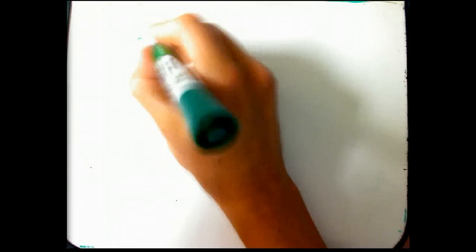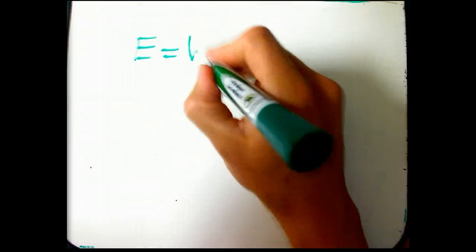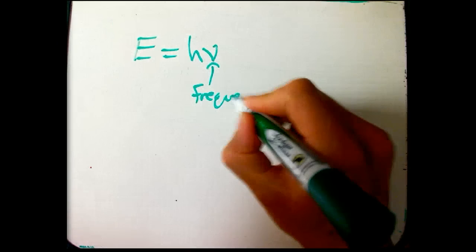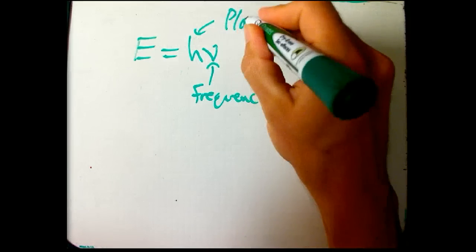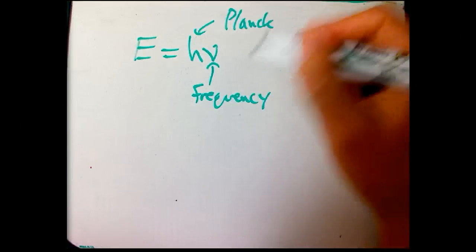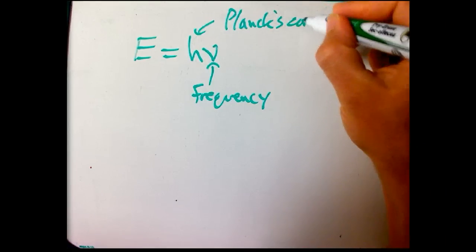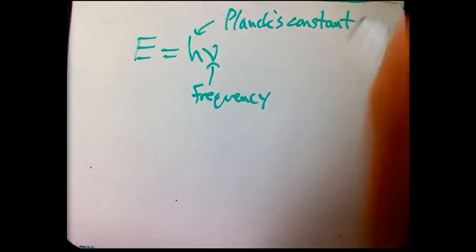then E is H nu, or that's the frequency, and this is Planck's unreduced constant because I'm using the cycles per second frequency, not the, like, radians per second.